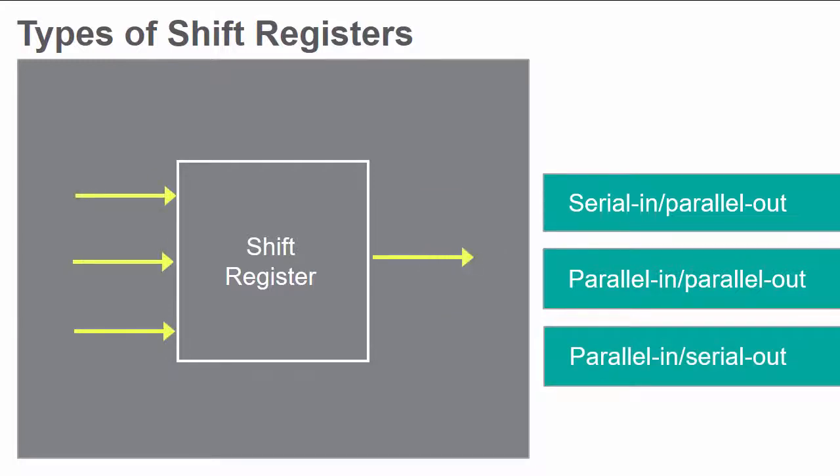Parallel-in, serial-out shift registers receive all bits of data in a group simultaneously but output the data one bit at a time.